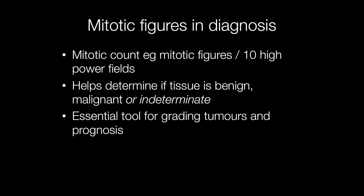The expected mitotic activity will vary depending on the tissue type and the tumour type. You can give some indication by assessing the mitotic activity whether the tumour is likely to be benign, malignant, or indeterminate. Assessing mitotic activity is an essential tool for grading certain tumours and giving a prognosis as to the expected behaviour of the tumour, and breast cancer is a particularly good example in this respect.